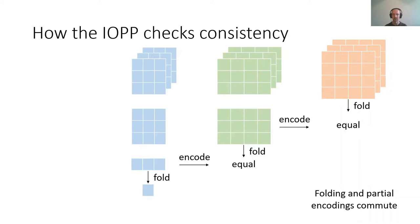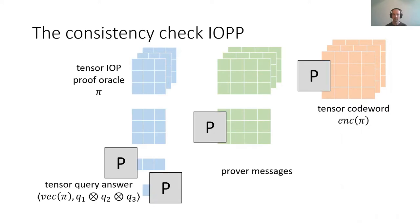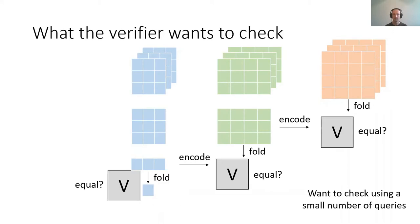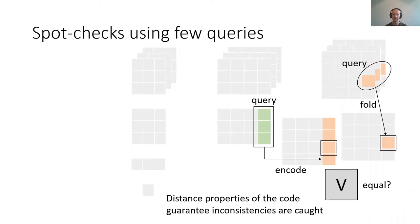In the actual consistency check IOP of proximity, the prover sends all of these intermediate values on the diagonal to the verifier. The verifier checks the collision between these encoding and folding operations — they want to check that those two values are equal. But this has to be done using just a small number of queries, so instead of reading the entire array in every case, the verifier makes spot checks using only a few queries — just querying these stripes of each of the arrays. The distance properties of the code C guarantee that any inconsistencies in the computation of the tensor query answer are caught by the verifier.